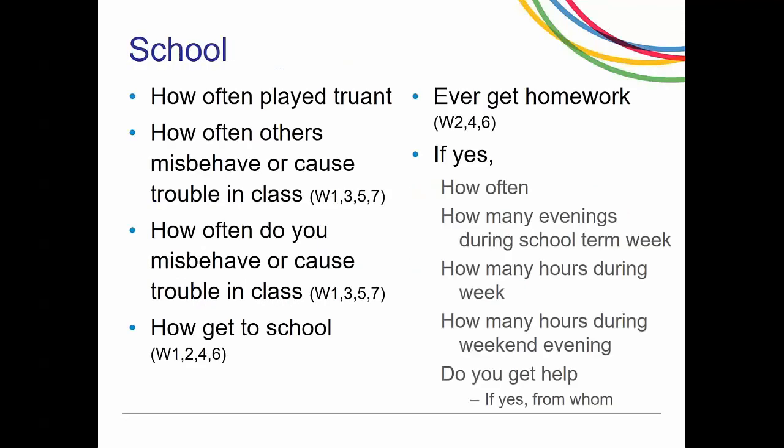Our next category is school. We ask young people how often they play truant, how often they misbehave, how often others misbehave, and how they get to school — whether they walk, take the bus, or are driven. We also ask whether they ever get homework, how often, how many evenings during the school term, how many hours a week they spend doing homework, how many hours at the weekend, and whether they get help doing their homework and from whom — parents, siblings, grandparents, or others. The truancy question is asked every wave; other questions alternate.